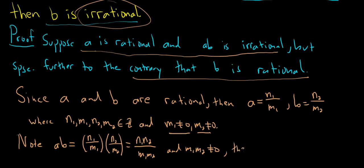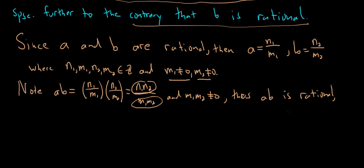So thus, this is an integer, this is an integer, it's not equal to zero. So thus AB is rational, a contradiction. Thus B must be irrational.